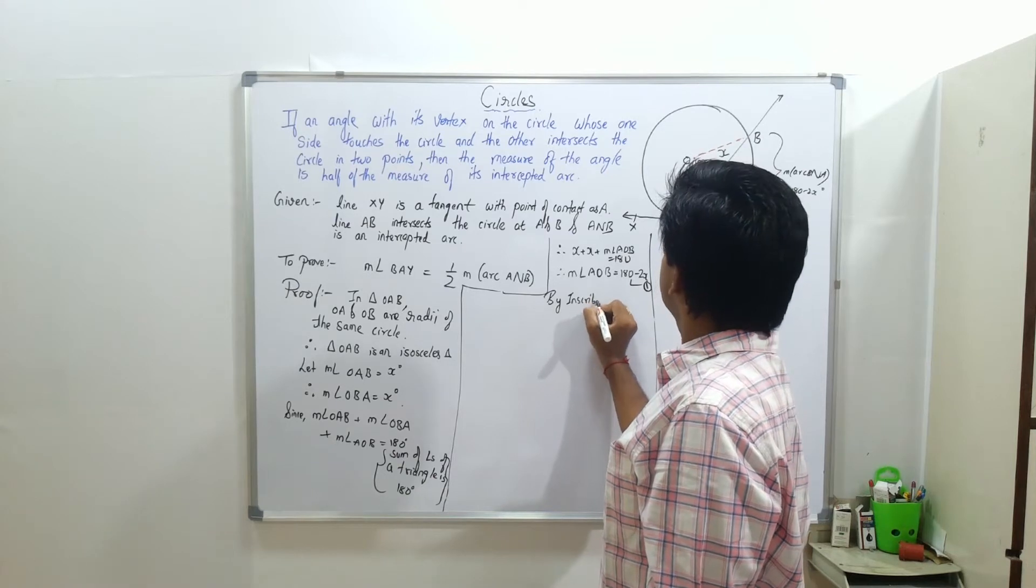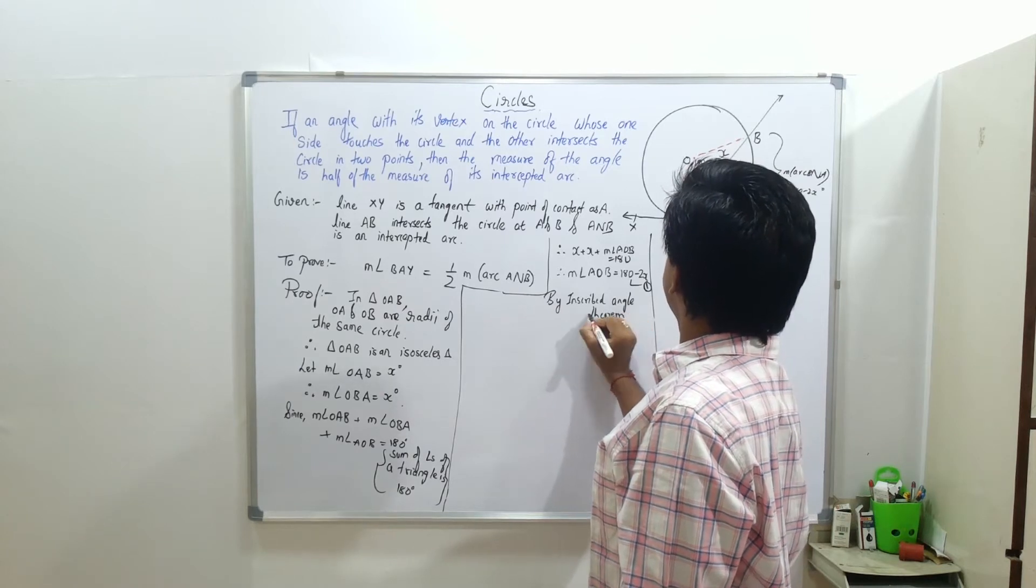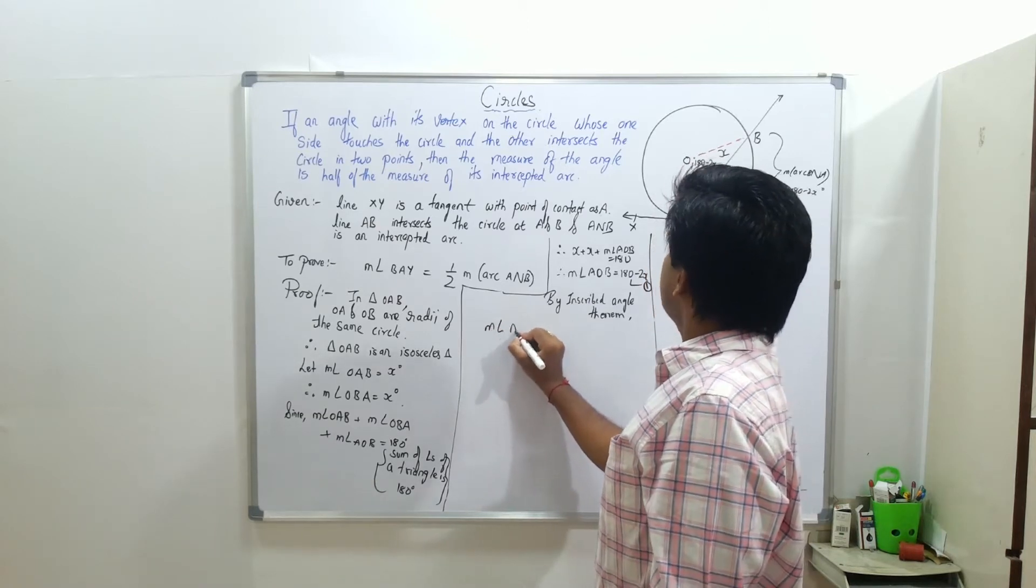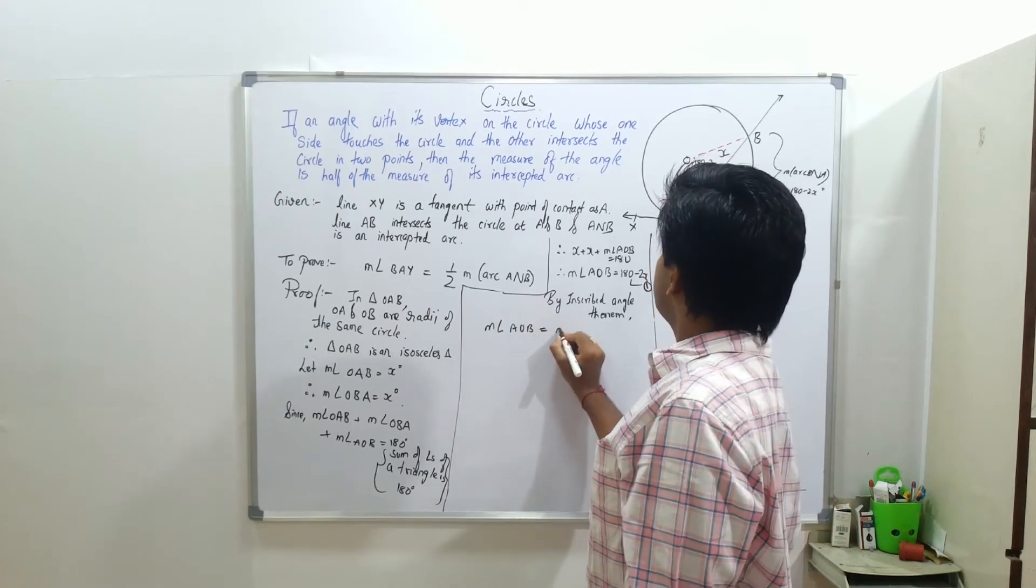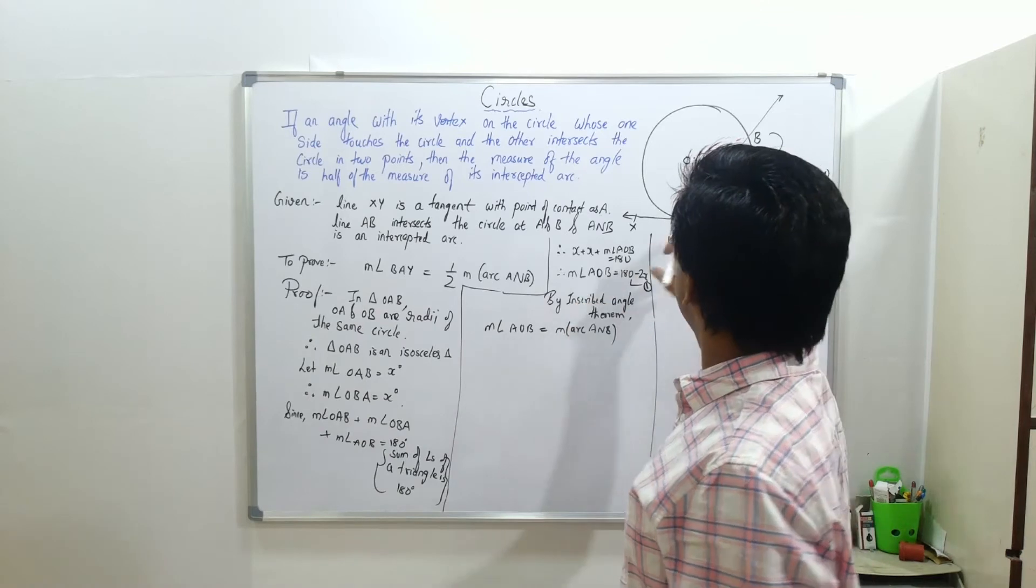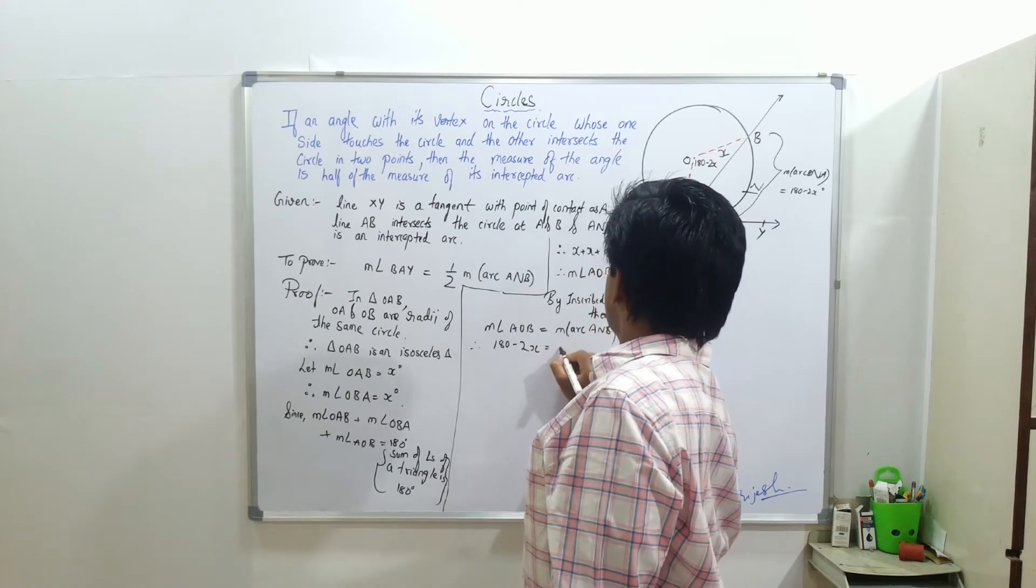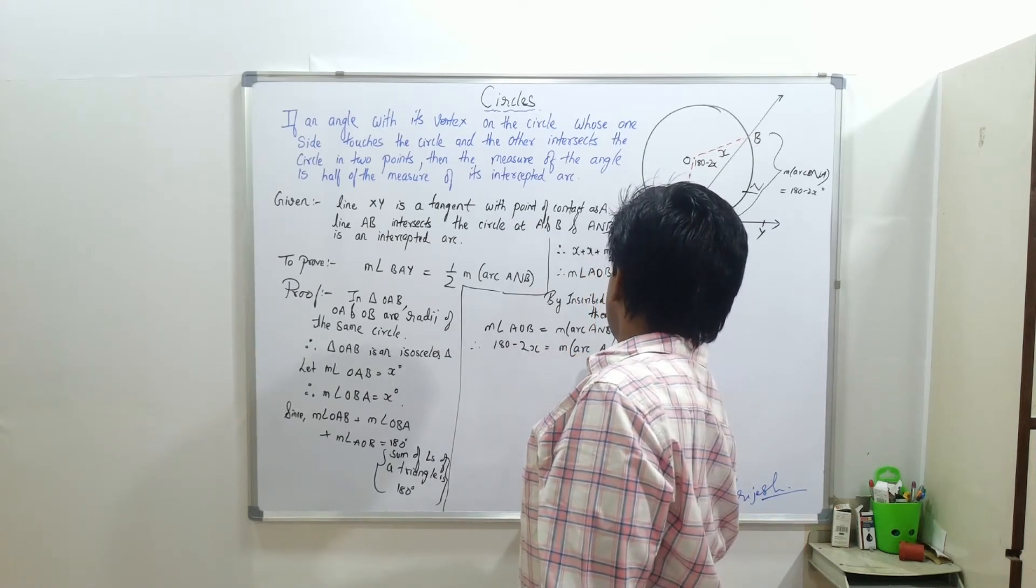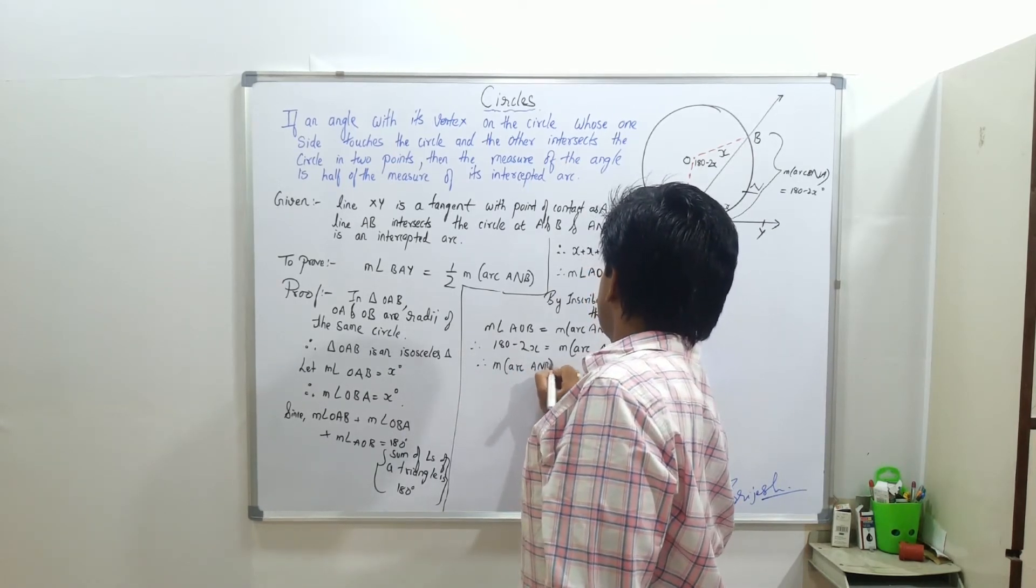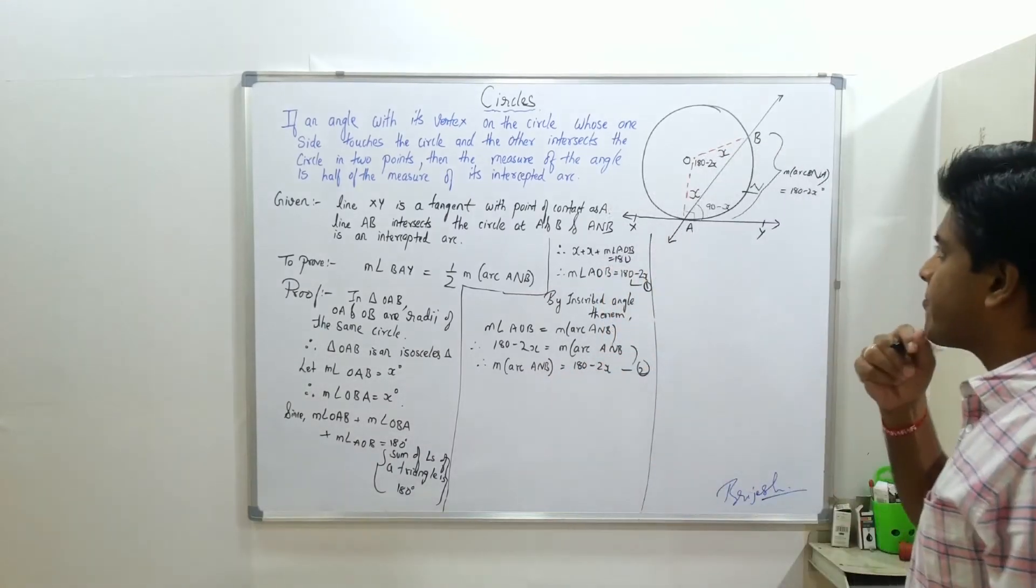By inscribed angle theorem, 180 minus 2X is equal to measure of arc AB. Therefore, measure arc AB is equal to 180 minus 2X.